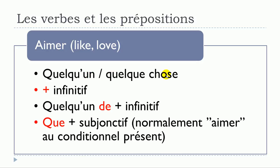Next is aimer. Aimer quelqu'un or aimer quelque chose. Then it's possible to put a verb at the infinitive form: aimer plus infinitif. Then aimer quelqu'un de plus infinitif. And the last one: aimer que plus subjonctif — and in most cases this structure is used when aimer is conjugated at the conditionnel présent, so aimer au conditionnel présent plus que plus subjonctif.